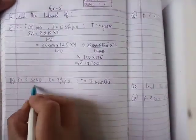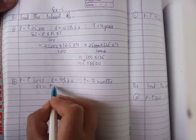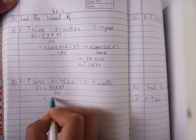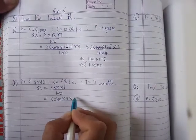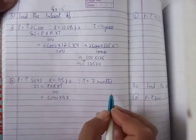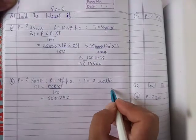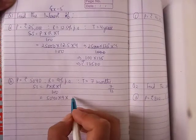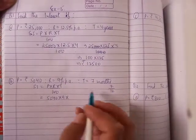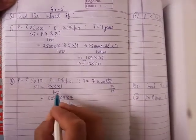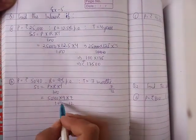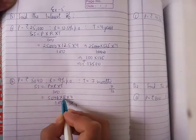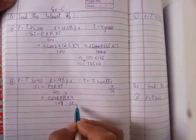The next part B. Formula simple interest equal to P into R into T upon hundred. Principal time to 5040. Rate is 9. Time is 7 months. In a year there are 12 months, so that is 7 upon 12. Upon 100. Zeros cancel.